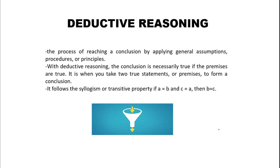Most of the time, deductive reasoning follows syllogism or the transitive property, which states that if A implies B and C implies A, then B implies C. Similarly, if A equals B and C equals A, then B equals C. Deductive reasoning is associated with a funnel shape — moving from general to specific, reaching conclusions by applying general assumptions to specific examples.